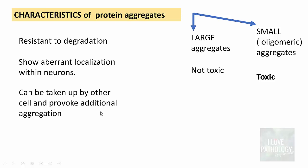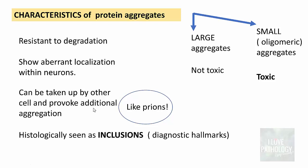This intercellular spread — where abnormal proteins are taken up by one cell and provoke additional aggregation within that cell — is the characteristic feature of prions. It is sort of an infectious disease-like process. Histologically, all these protein aggregates are seen as inclusions, and these inclusions are the diagnostic hallmark of various neurodegenerative diseases.